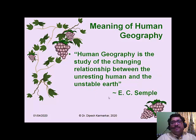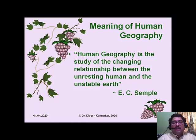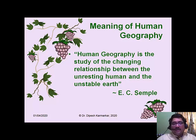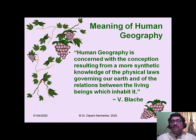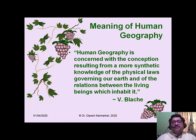What does EC Semple say? She says that human geography is the study of changing relationship between the unresting human and the unstable earth. The next definition is by Vidal de la Blache. He says human geography is concerned with the conception resulting from a more synthetic knowledge of the physical laws governing our earth and of the relations between the living beings which inhabit it.